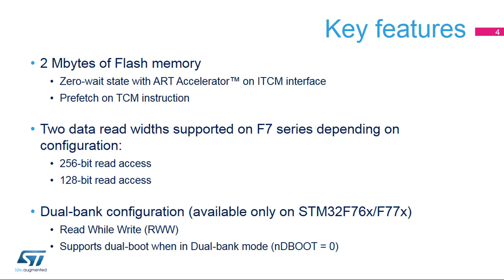The STM32F7 series has up to 2MB of Flash Memory configurable in single or dual bank mode, with a read-while-write capability that can program or erase one bank while executing code from the other bank. The dual bank feature is only available on STM32F76X and F77X devices.